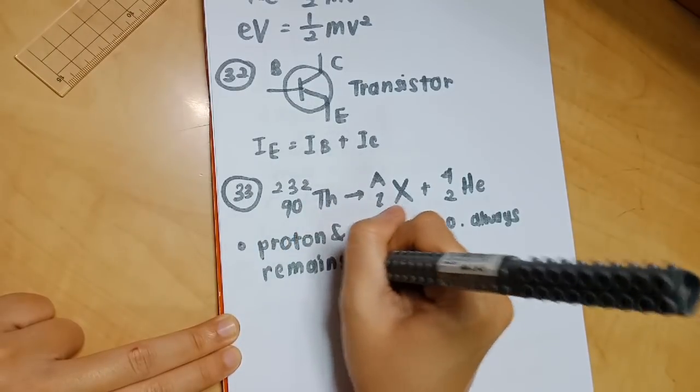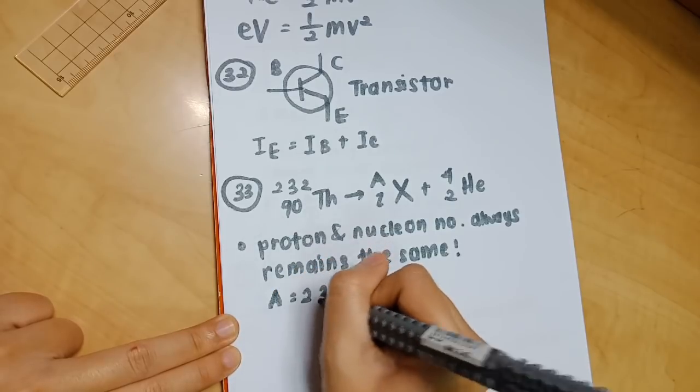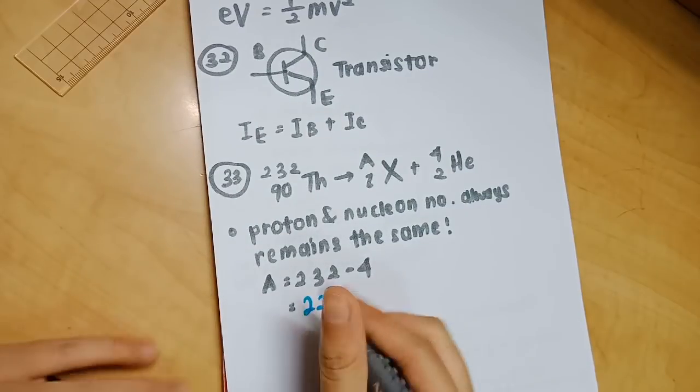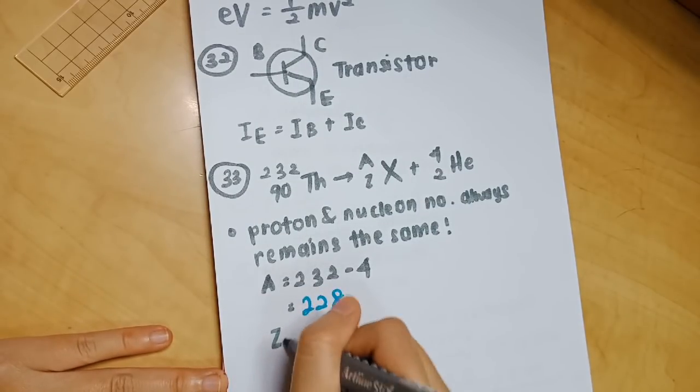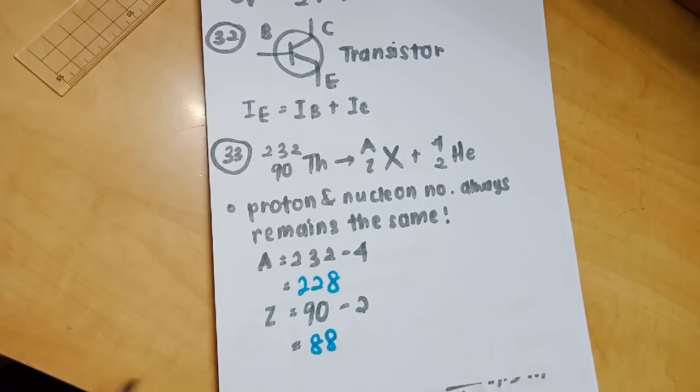Let's say you're asked to find A. The way to find A is you're going to use 232 minus 4, and your answer would be 228. If you're asked to find Z, 90 minus 2, your answer would be 88. The proton number and nuclear number always remain the same.